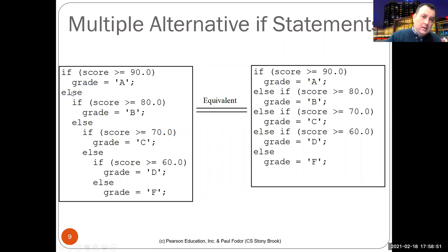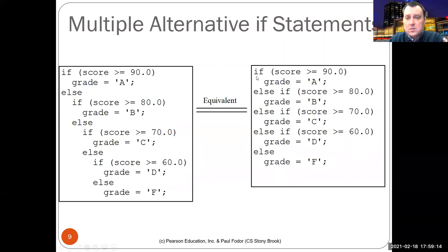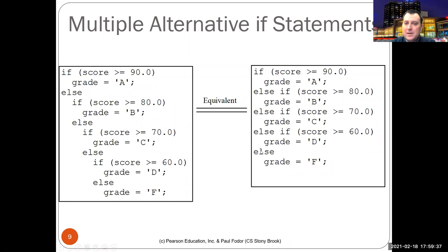The else branch is an if-else statement itself, nested further each time. Since Java doesn't use indentation for anything, we can write this more concisely by placing the if right after else — else if, else if, else if — with the final case as just else. In Java, every else matches the most recent unmatched if in the same block, so those indentations are not structurally required, and the compact form makes the code easier to read.